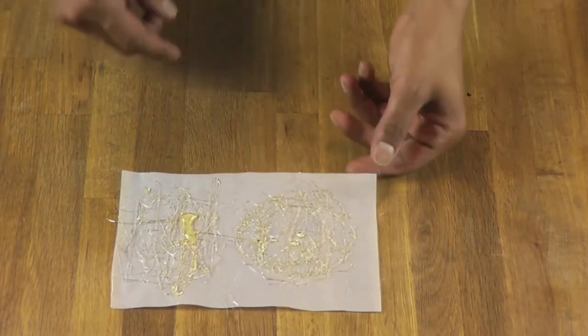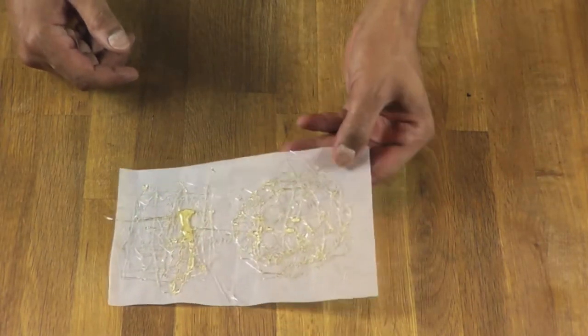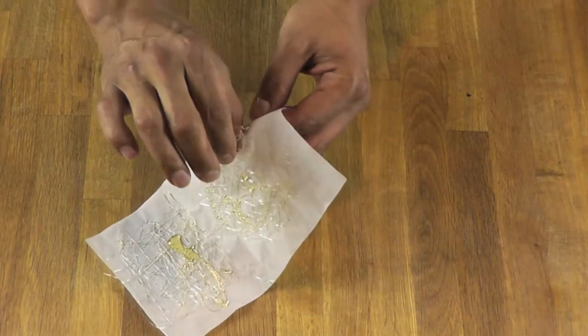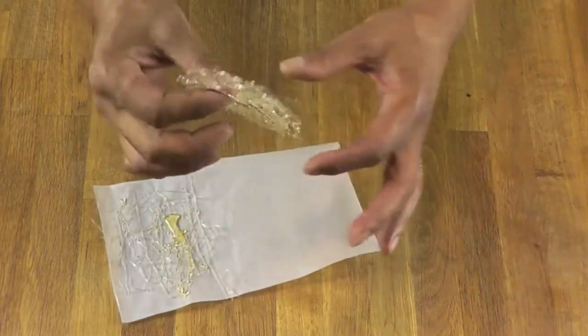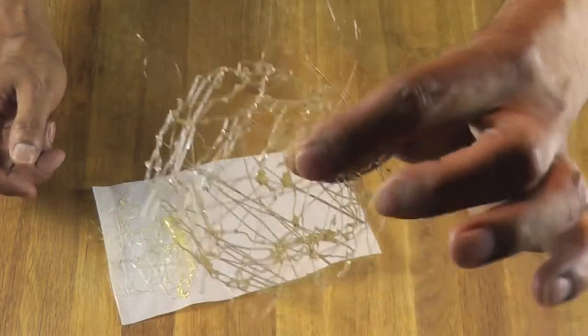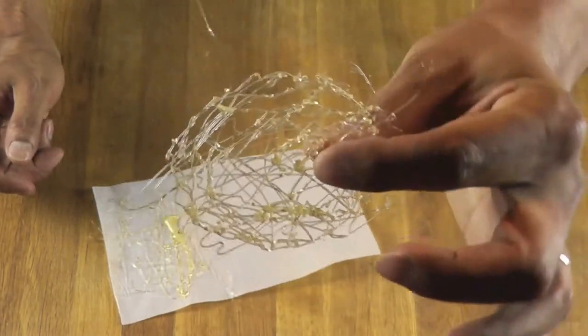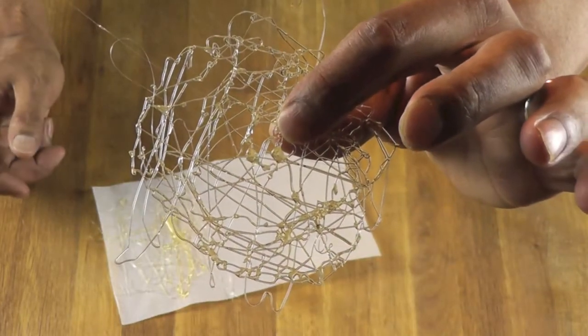So those are done. Those are two very simple sugar garnishes that you can make here and there. They're just going to release themselves very delicately from the parchment paper. And here you have it, a nice beautiful caramel garnish.